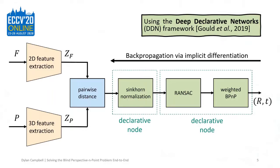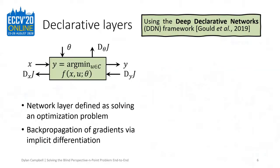Our key insight is that the camera pose optimisation algorithms, including robust global search techniques such as RANSAC and state-of-the-art non-linear PnP solvers, can be seamlessly integrated into an end-to-end deep learning framework. We use the deep declarative networks framework to formulate network layers for solving an optimisation problem. These declarative layers are more flexible and general than standard layers, since they admit constraints on the output and decouple the gradient computation from the algorithm used to solve the optimisation problem. Crucially, the technique of implicit differentiation enables backpropagation of gradients through a declarative layer without having to traverse the forward processing function.